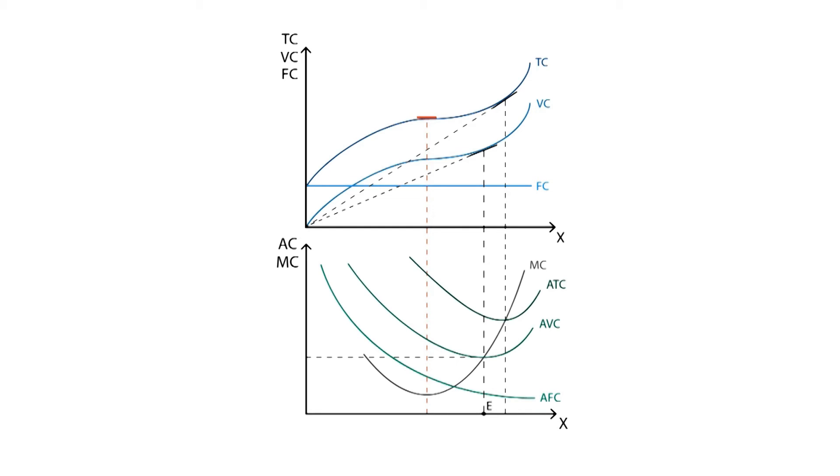We label point E as the point where production is more efficient, and point E prime as the point where production starts making sense to the firm from an economic point of view. Let's see why.